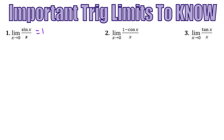Next up, the limit as x approaches 0 of 1 minus cosine of x over x is equal to 0. And lastly, number 3, which we will prove in just a minute, is the limit as x approaches 0 of tangent of x over x equals 1.